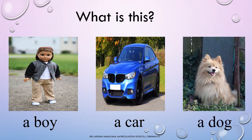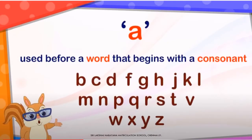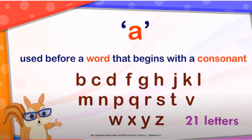Why are we using 'A' before the words? 'A' is used before a word that begins with a consonant. The consonant letters are: B, C, D, F, G, H, J, K, L, M, N, P, Q, R, S, T, V, W, X, Y, Z. All these 21 letters are consonants.